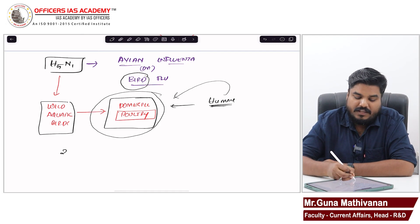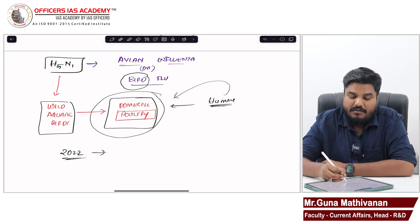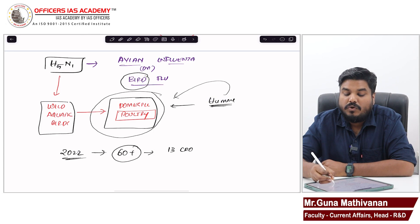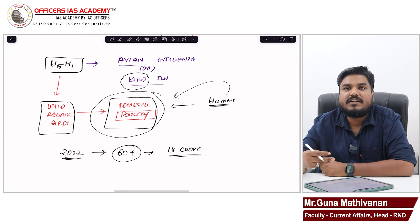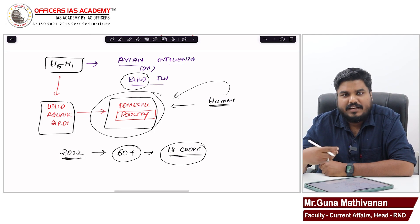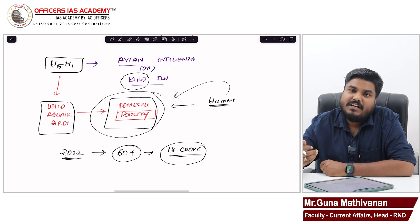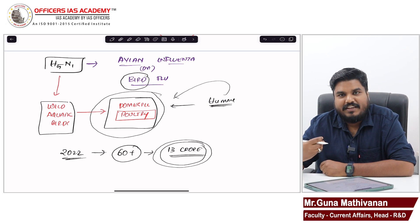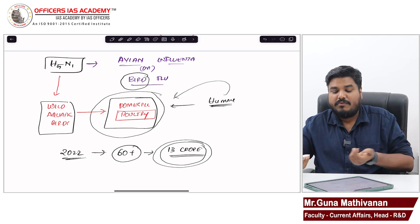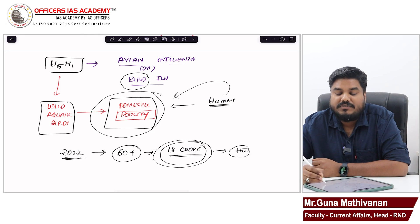In 2022, more than 60 plus countries witnessed outbreak of this H5N1. Almost 13 crore birds - poultry, chicken, duck - either died because of H5N1 infection or we destroyed them. This is the impact because if you are not doing it, that is going to infect humans and cause a huge crisis.